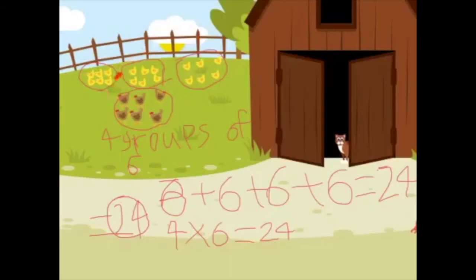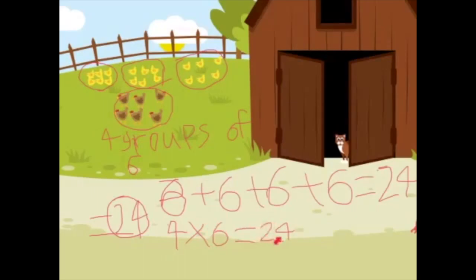There is four groups of six. And these are some ways to figure out the answer. Four groups of six with writing. And you can also do six plus six plus six plus six plus six equals twenty-four. They're all the same answer, by the way. Four multiply six equals twenty-four, as I told you. And the answer is twenty-four. Yay!